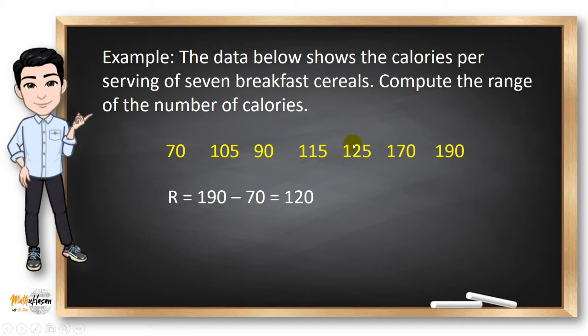The first thing that we need to do here is to identify the highest value in the dataset. In this case, it's 190. The lowest value in the dataset is 70. Subtracting these two values will give us the range of the dataset. 190 minus 70 is 120.